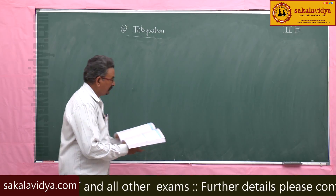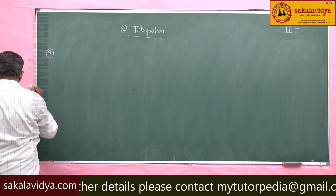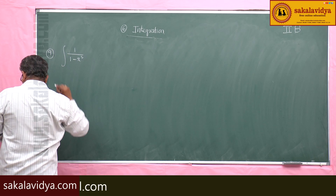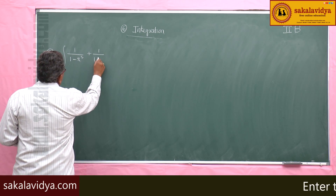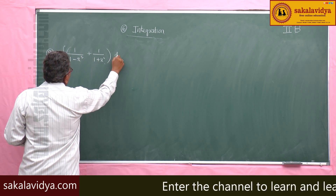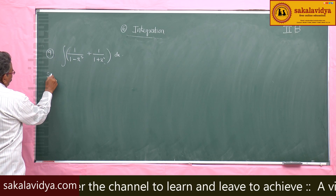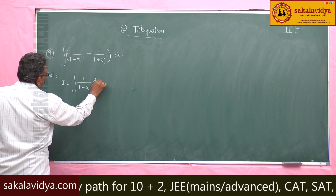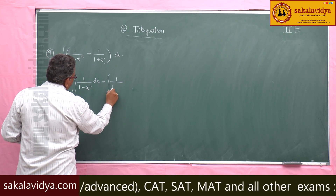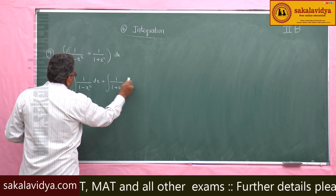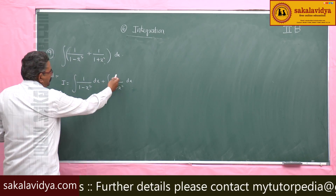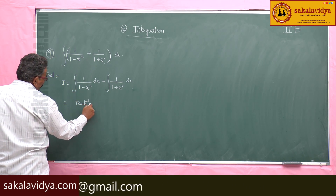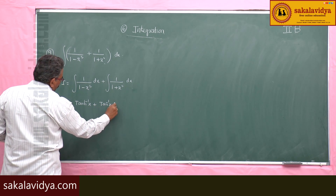Next, evaluate integral of 1 by 1 minus x square plus 1 by 1 plus x square dx. I is equal to integral of 1 by 1 minus x square dx plus integral of 1 by 1 plus x square dx. This first term is the derivative of tanh inverse x, and the second is the derivative of tan inverse x. So the integral is tanh inverse x plus tan inverse x plus constant of integration.